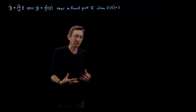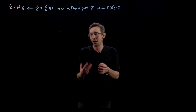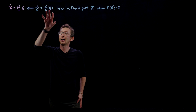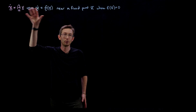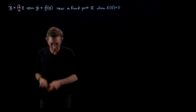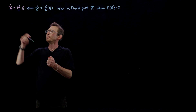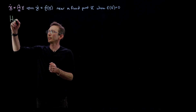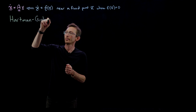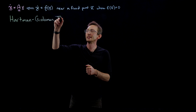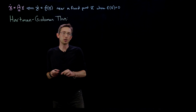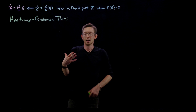I want to tell you about one really powerful theorem for dynamical systems, which gives us a lot of insight into when this local linearization is possible and when it is not possible. This is called the Hartman-Grobman theorem.